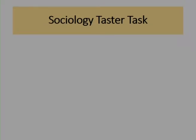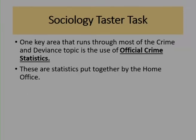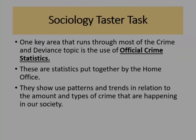Let's move to your taster lesson. We're going to talk about an area that runs through most of the crime and deviance topic — the use of official crime statistics. Official crime statistics are put together by the Home Office, a branch of the government. They're good because they show us patterns and trends in relation to the amount and types of crime happening in our society.